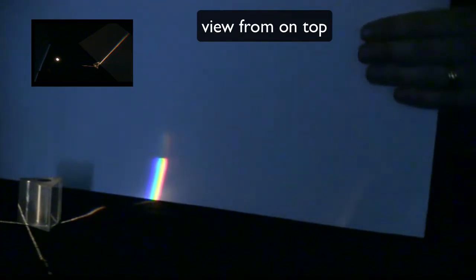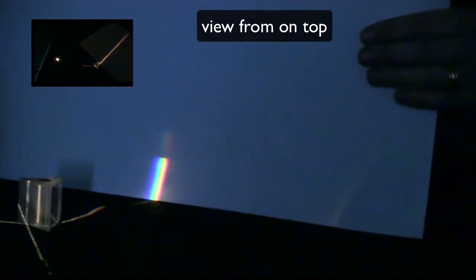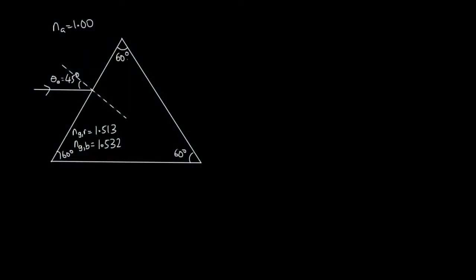So let's have a look at some ray tracing now to show exactly why this happens using Snell's Law. So what we have here is a diagram showing us a prism and the light ray coming in. The light ray is making an angle of 45 degrees with the normal to this prism. And this glass prism has different refractive indexes for red light and blue light. So let's start by performing the calculation for the red light.